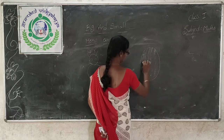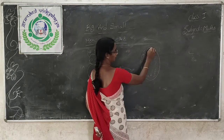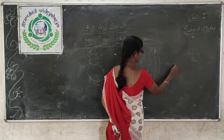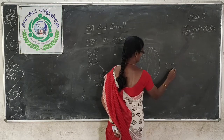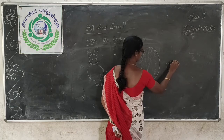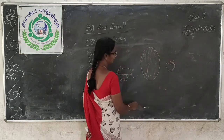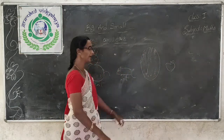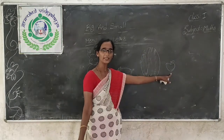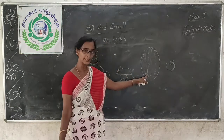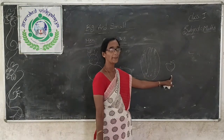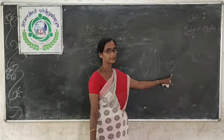And see one more example. What is this? Watermelon. And this is an apple. Which is big? Watermelon is big or apple is big? Watermelon is big in size and apple is in small size.